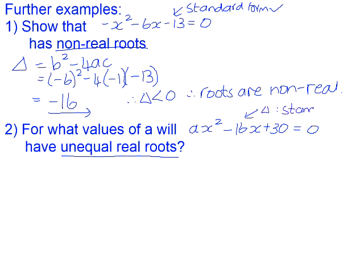Before we find delta, we need to make sure that our equation is in standard form. Here, we do have our equation in standard form, so we can immediately substitute for our delta. So b is -16, a is a (we don't know what the value of a is), and c is 30.